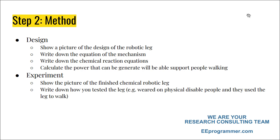Most importantly, if you are making a chemical-powered prosthetic robotic leg, you want to make sure the chemical power would be enough to support physically disabled people while walking. So you need to calculate the power. For the experiment part, you need to show a picture of the finished chemical robotic leg — you have to actually build it. Then write down the procedure: how did you test the leg? For example, you give the robotic leg to physically disabled people and have them use it to walk.